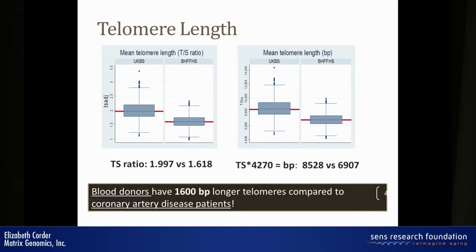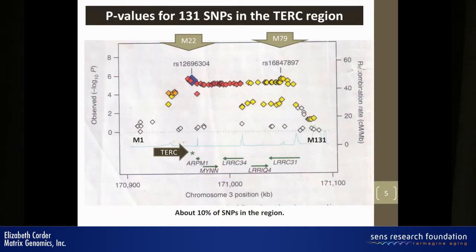I should point out one salient feature of these two subject groups. Mean telomere length for the blood donors was about 8,500 base pairs long, and it was 1,600 base pairs shorter in the heart disease patients.